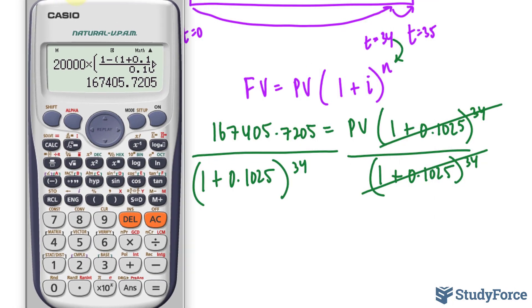On our calculator, we'll take the number on our screen, don't erase it, and divide that now by, in parentheses, 1 plus 0.1025, and we'll raise that to the power of 34. We end up with 6650 decimal 94 to two decimal places.